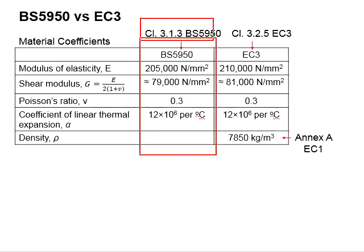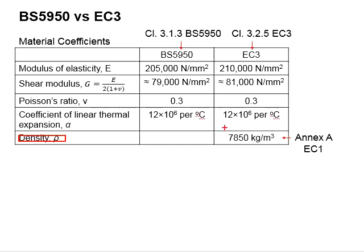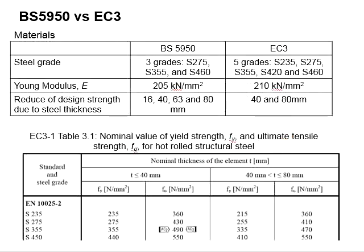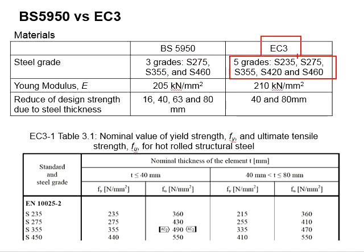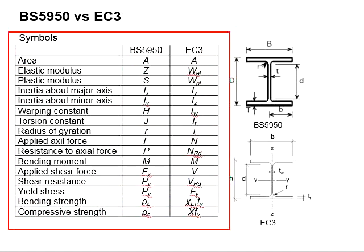These section properties can be obtained from Clause 3.1.3 in BS and from Clause 3.2.5 in Eurocode 3. For the density of steel sections, refer to Eurocode 3. In terms of steel grades, there are three grades for BS5950 and five grades for Eurocode 3. The yield strength is different, and there is a reduction in design strength due to steel thickness in Eurocode 3 — reductions appear when thickness exceeds 40 mm and 80 mm, while BS separates thickness into four categories: 16, 40, 63, and 80 mm.